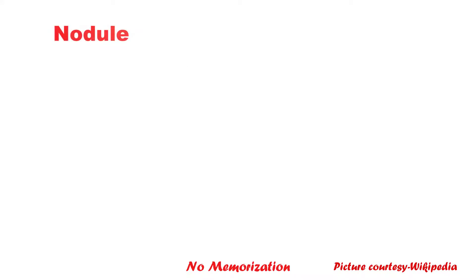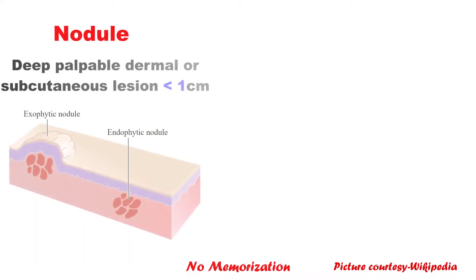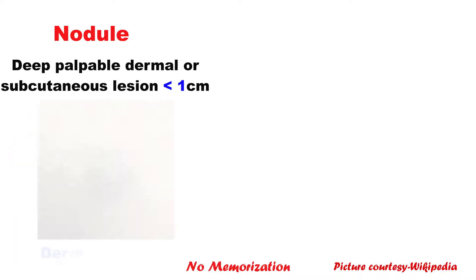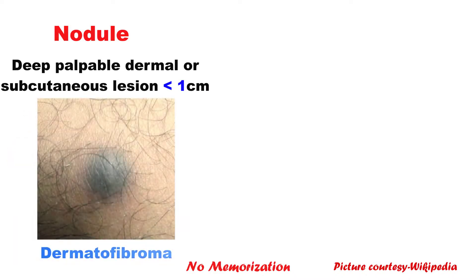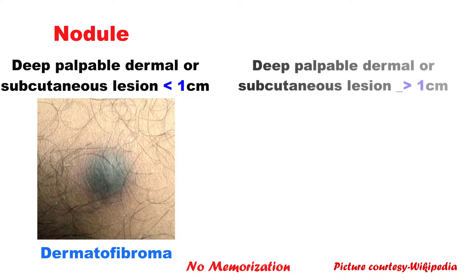Now nodule — it is a deep, palpable dermal or subcutaneous lesion of less than 1 cm. For example, dermatofibroma. The same lesion, if equal to or more than 1 cm, is called a tumor, such as lipoma.